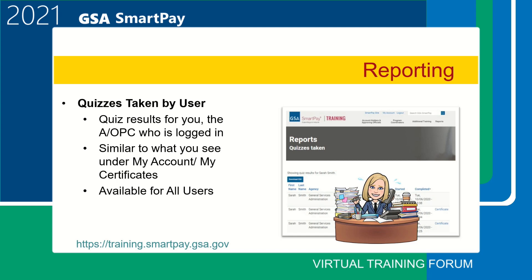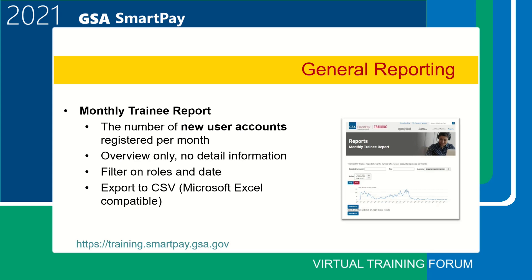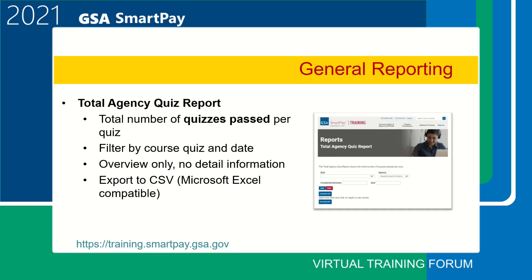The 'Quizzes Taken by User' report is available to everyone and displays the quiz results for the user who is logged in. The rest of the reports are available only to approved Level 1 AOPCs or their delegates. The monthly training report shows the number of new user accounts registered per month for your agency. This provides an overview only with no detail information. The initial results are for all roles, but you can filter on roles and choose specific timeframes. For example, running a report for GSA from January through March would tell you the number of new users each month.